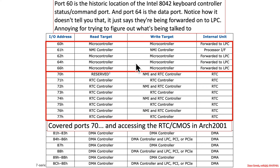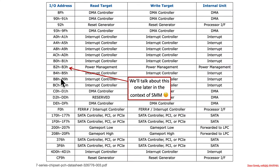Another thing we actually saw before was port 70, and that was used for the CMOS and real-time clock. It also had an element of use for non-maskable interrupts, but we didn't cover that before. Another thing we're going to see quite a bit later is ports B2 and B3. These are listed as power management, which doesn't really tell you a whole lot. Specifically, this is going to be used for power management causing system management interrupts — system management mode handles power management as one of its jobs, so this is basically a way to invoke system management mode to do power management tasks.